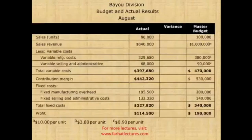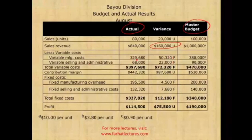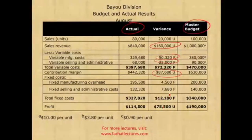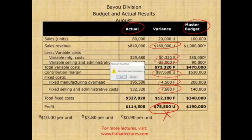The variance between actual and master budget shows: sales revenue is unfavorable, variable manufacturing cost is favorable, variable selling cost is favorable, but overall contribution margin is unfavorable. Fixed manufacturing was favorable, fixed selling was favorable, but overall you are unfavorable by $75,500. This comparison is not very useful for us.